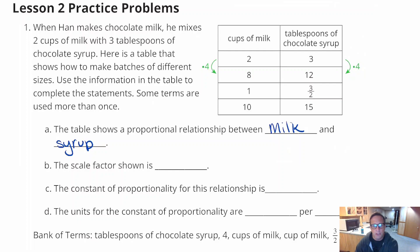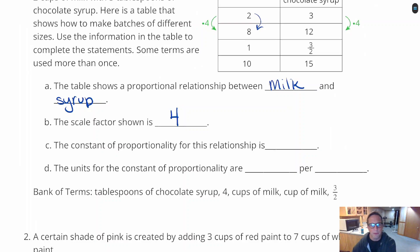For B, the scale factor shown is, that's a little bit of a weird question. I think it's referring to this information. That's showing a scale factor of 4. So it's times 4. 2 times 4 is 8, and then 3 times 4 is 12. But that doesn't work from here to here. So I think it's just talking about the scale factor amongst these values right there. If you're stuck on that one, that's what it is.